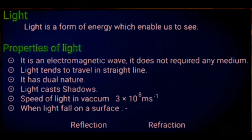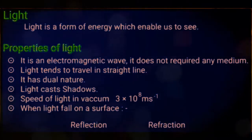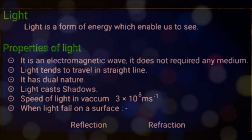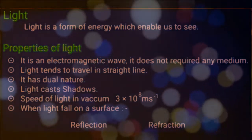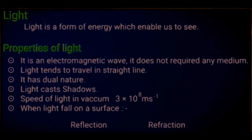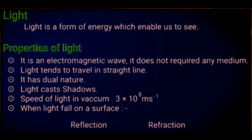Number 5: the speed of light in vacuum is always 3 × 10⁸ meters per second. Number 6: when light falls on a surface, it may get reflected or refracted. So these are the basic properties of light.